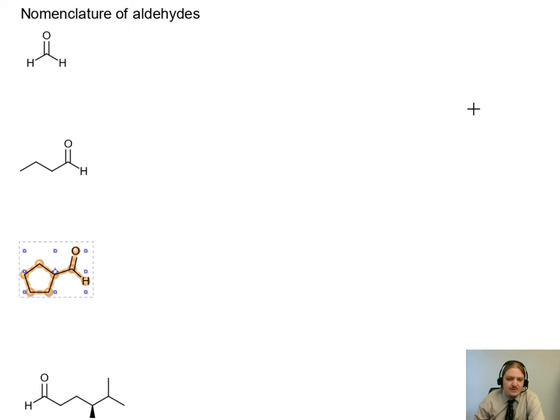I want to start with our very simplest aldehyde, the one carbon aldehyde. Generally you make names of aldehydes by taking the corresponding alkane and changing the suffix to -al. So that means the corresponding one carbon alkane would be methane and we change that to methanal.